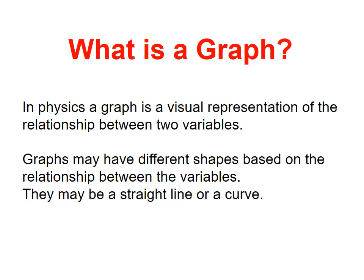First, let us define what is a graph. Now, in physics, a graph is a visual representation of the relationship between two variables. Graphs may have different shapes based on the relationship between the variables. They may be a straight line or even a curve.